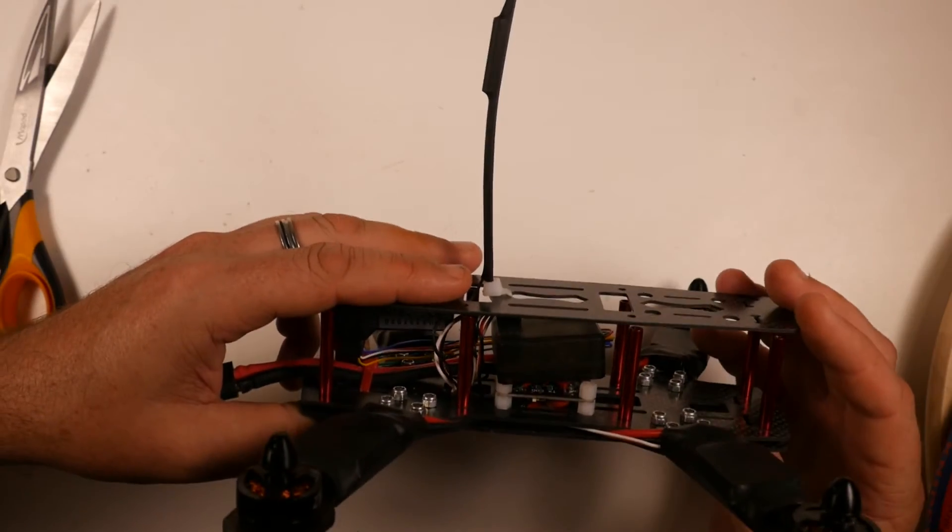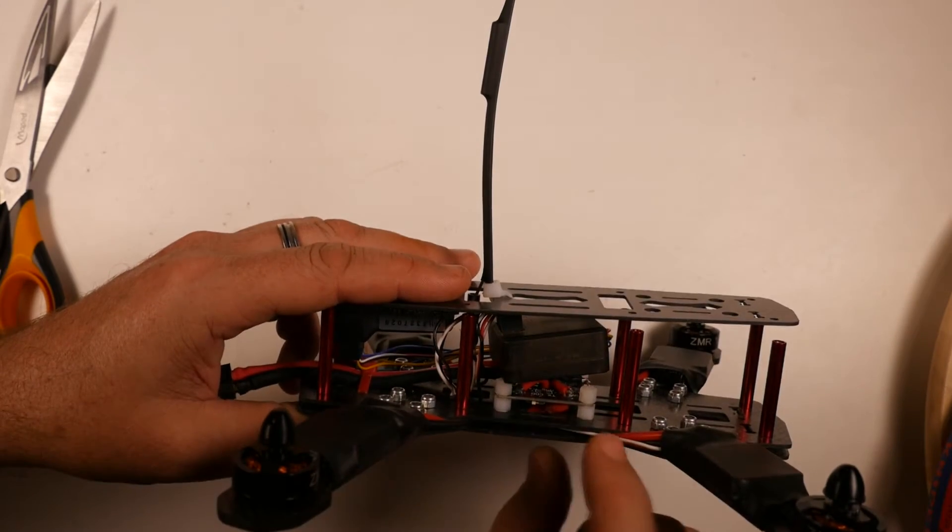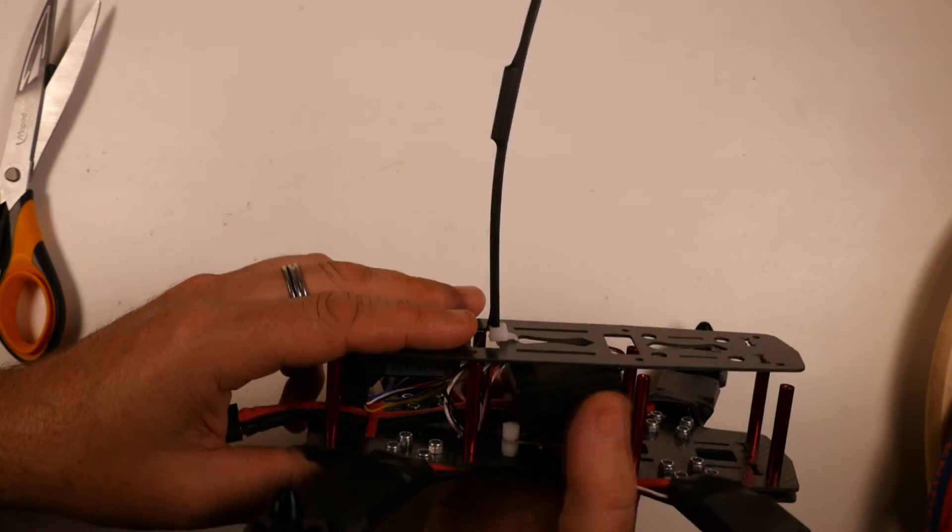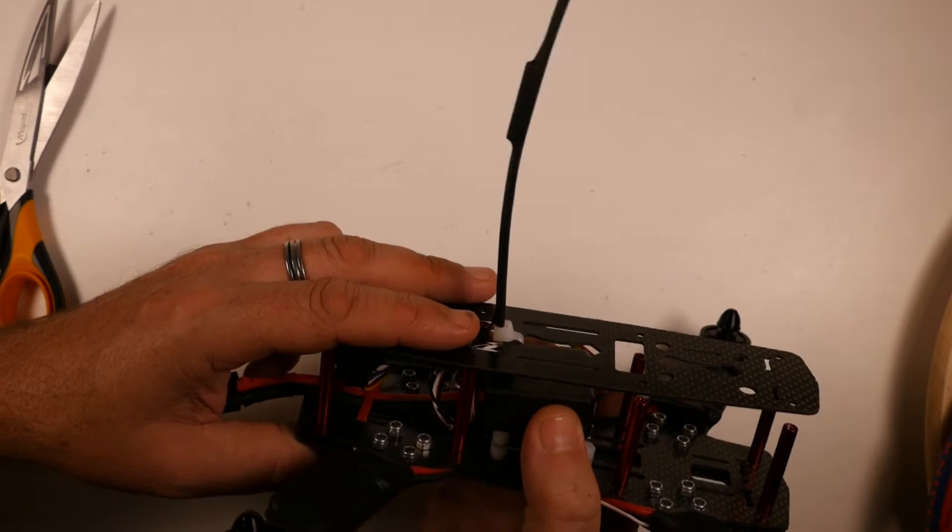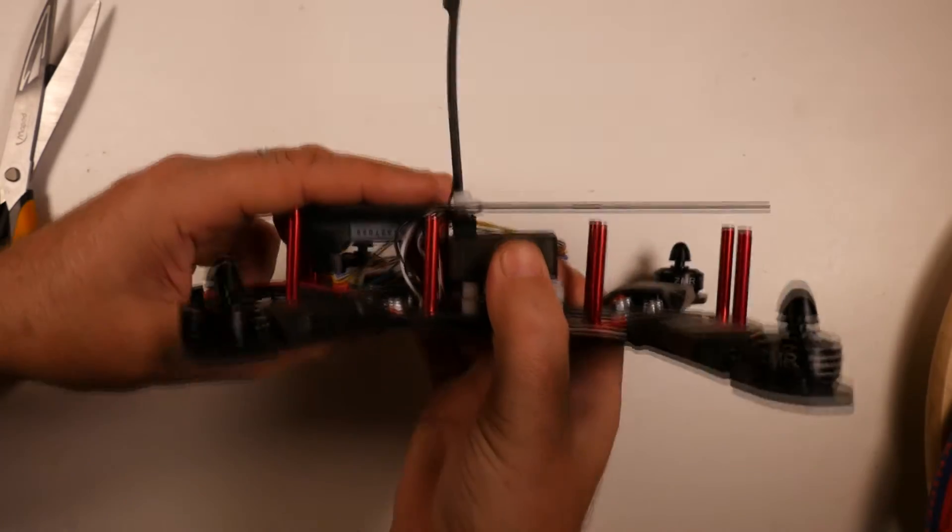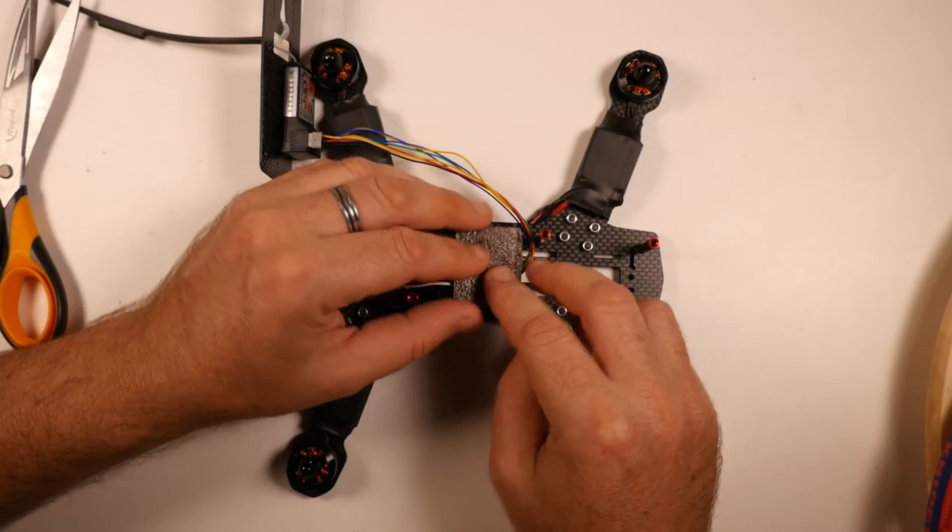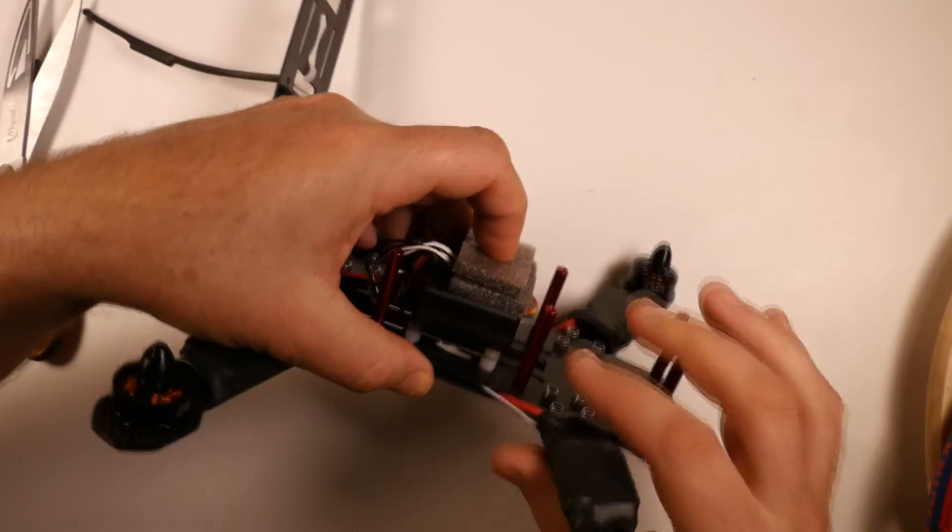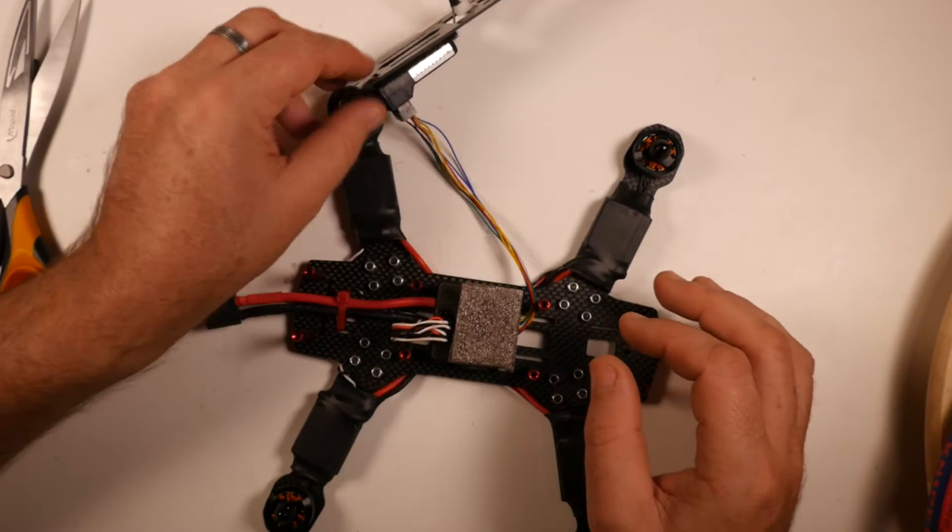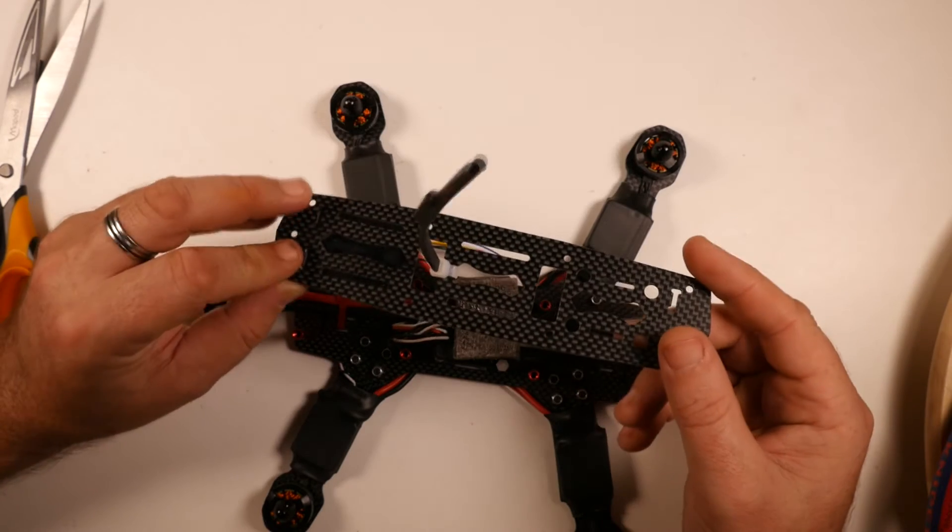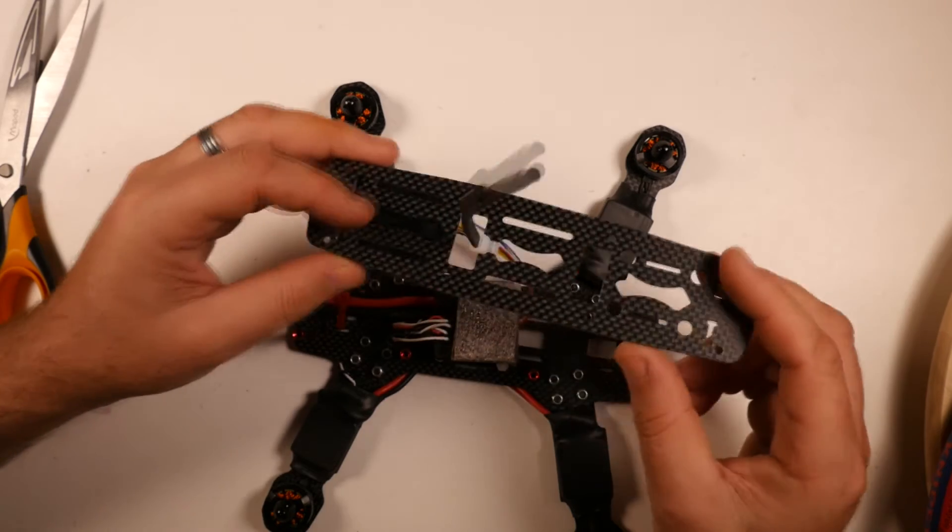Now the next thing we need to do is get our flight controller in and screw our frame down. What I've noticed is that with the standoffs that are supplied here, the clearance between the servo connectors and the top of the frame is, well, there is no clearance. So what I've actually done is just cut a couple of pieces of foam. They're quite a bit bigger than the gap between the top of the standoff, and I'm just planning to basically sandwich this in and use just the pressure from the top plate to hold it in place.